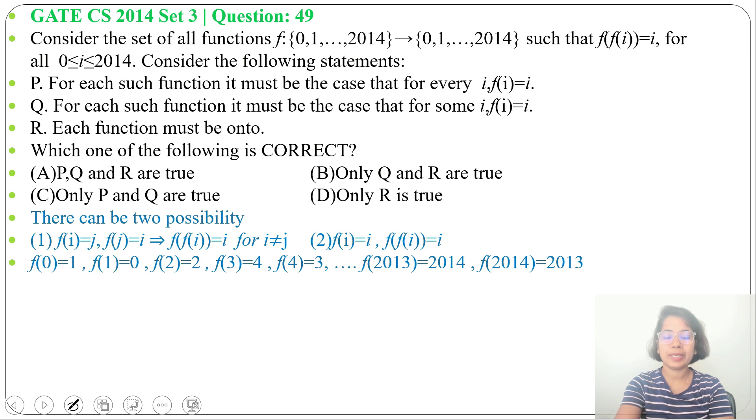Statement P: for each such function, it must be the case that for every i, f(i) = i. This is false, not for every i, for some i it may be true. Like here, we took an example.